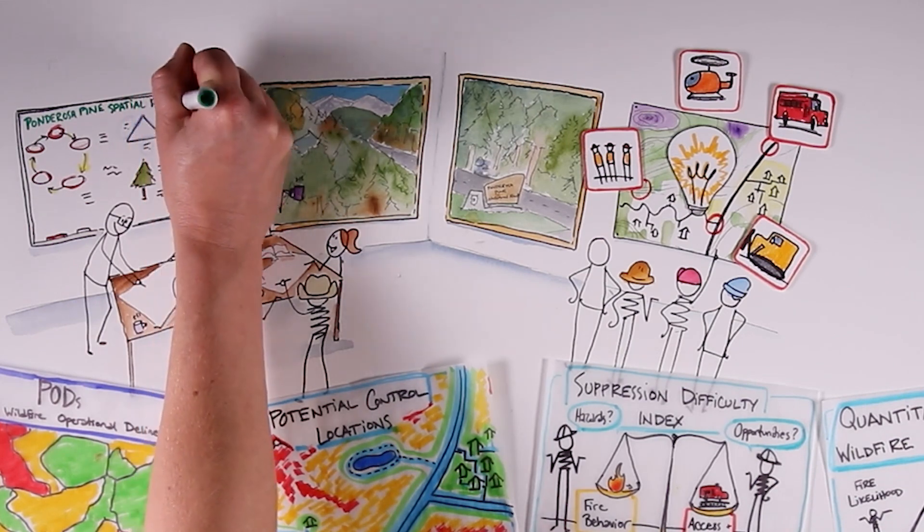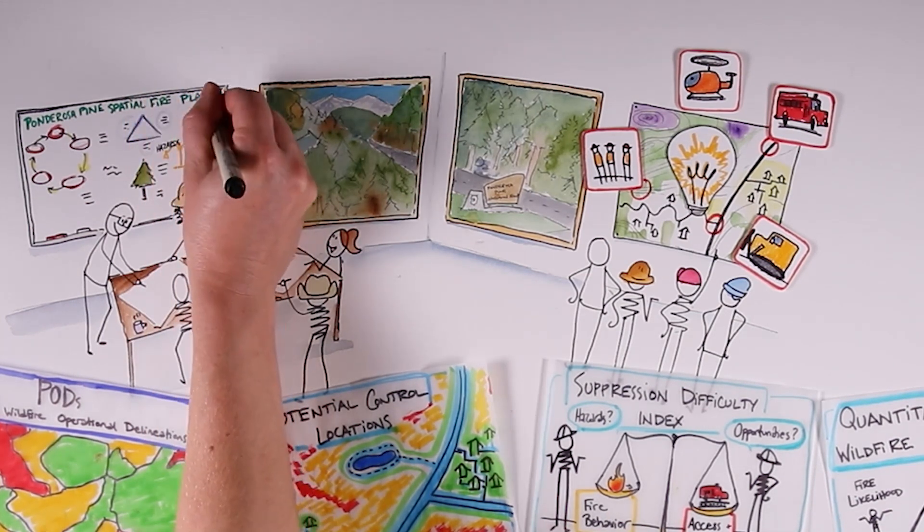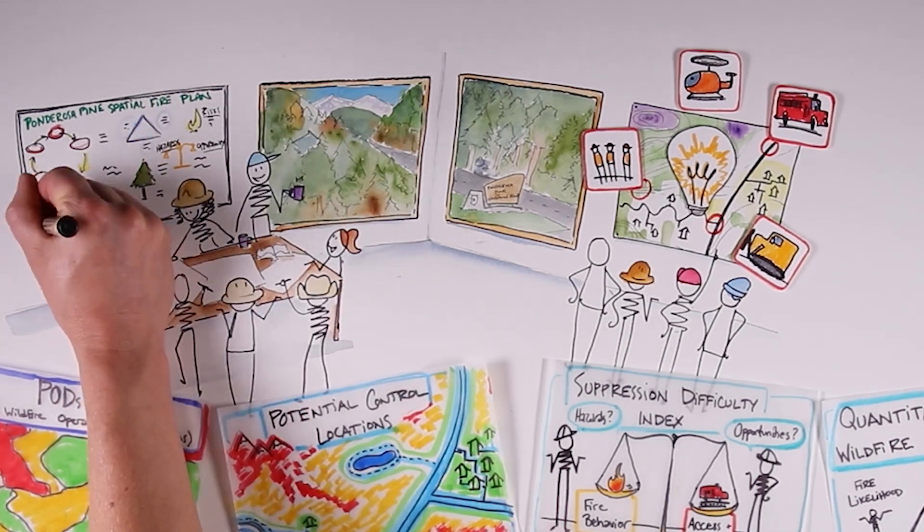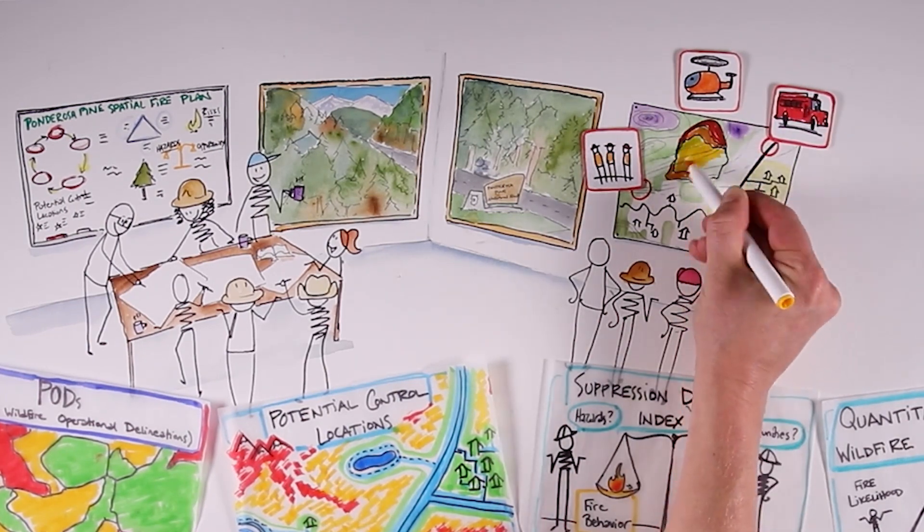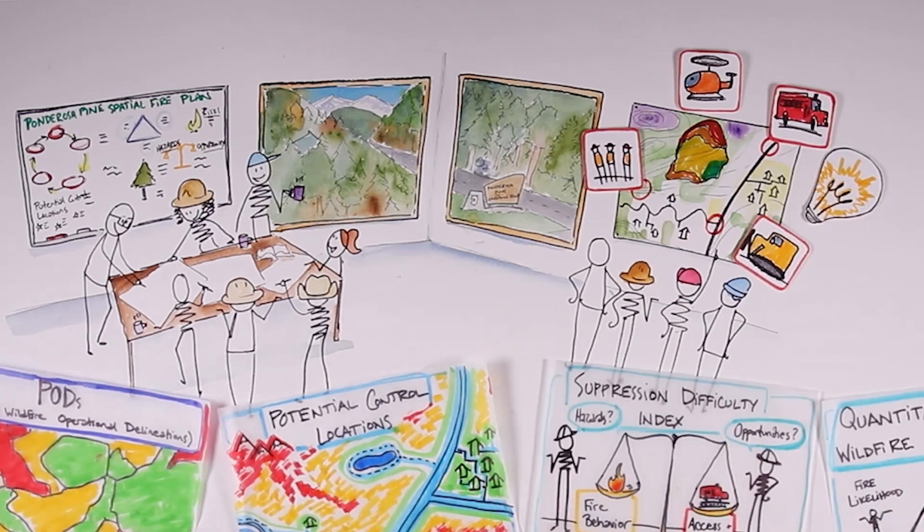And forest managers and their neighbors, like here on the Ponderosa, use these tools to integrate fire into landscape planning, prioritize fuel treatments, and create or improve control opportunities to reduce risk to things they value.